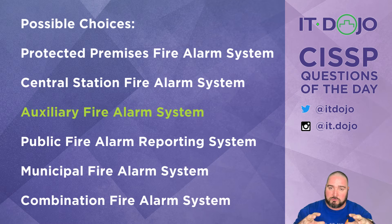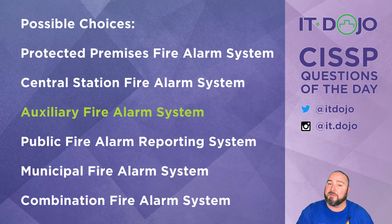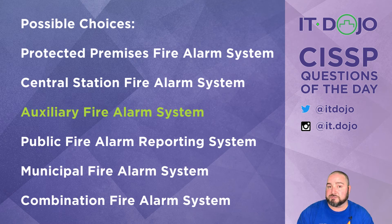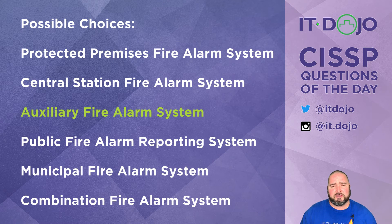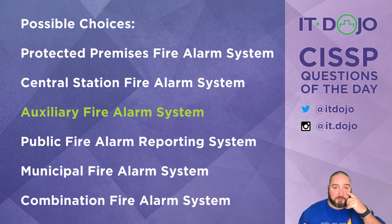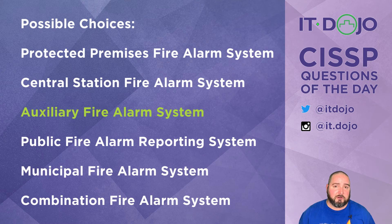Third option is an auxiliary fire system — yes, this is what we're looking for. An auxiliary fire system is when you have your own local notification system, local alarms, local fire suppression, and it also interfaces with the local fire department and/or police department. You get a local alarm that goes off so you can begin to react, and you also get notification to the fire department. Auxiliary is absolutely the answer we're looking for here.